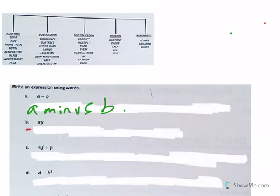Second one here, XY. You could say X times Y. You could say the product of X and Y. X multiplied by Y. Right? Different ways of saying that.